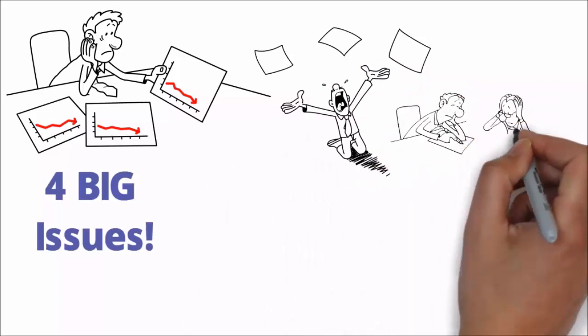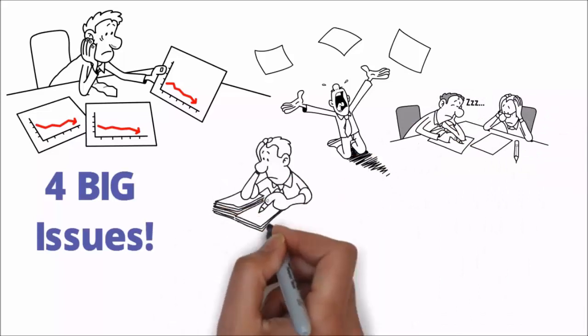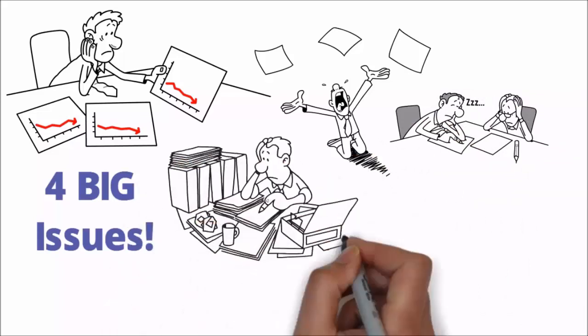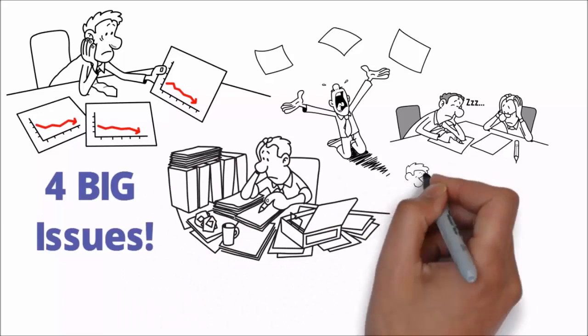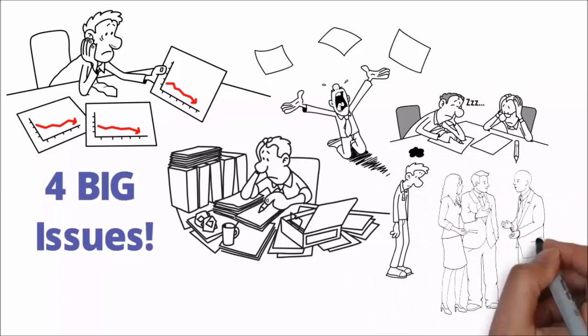Three, it creates silo thinking because the need to collaborate between departments is so big that it has outgrown our current functional structures. Four, the decision process has become too slow or inefficient, decreasing our agility.